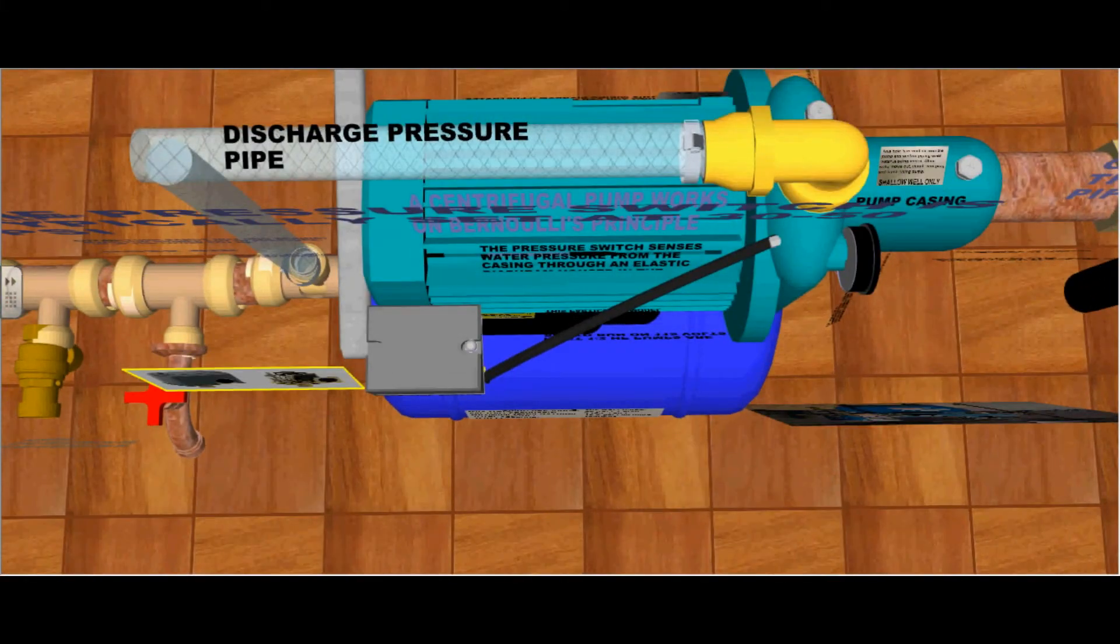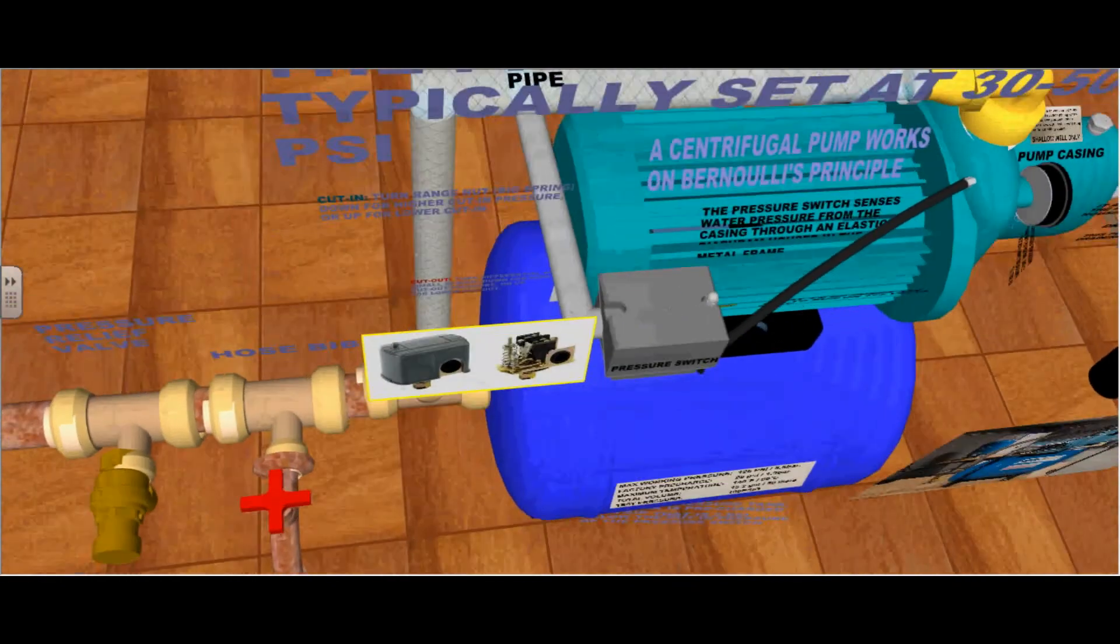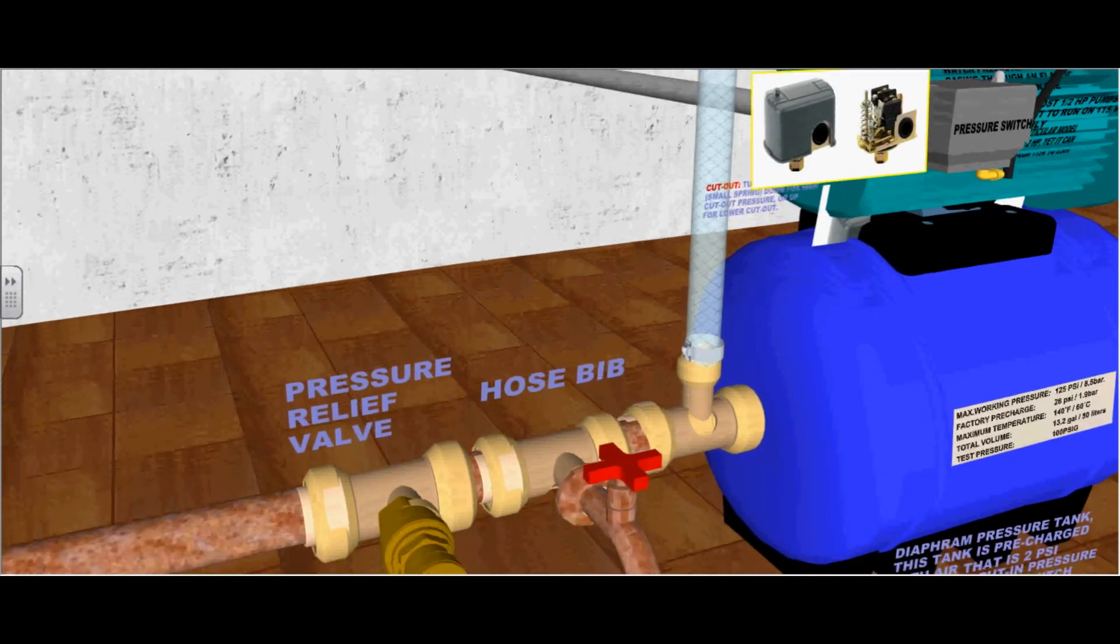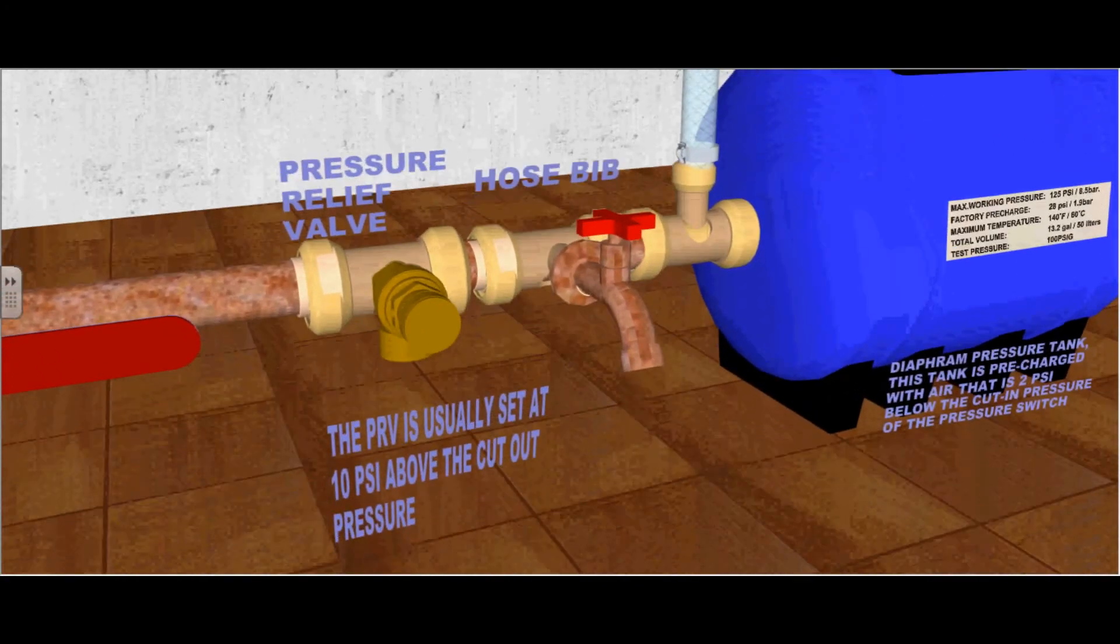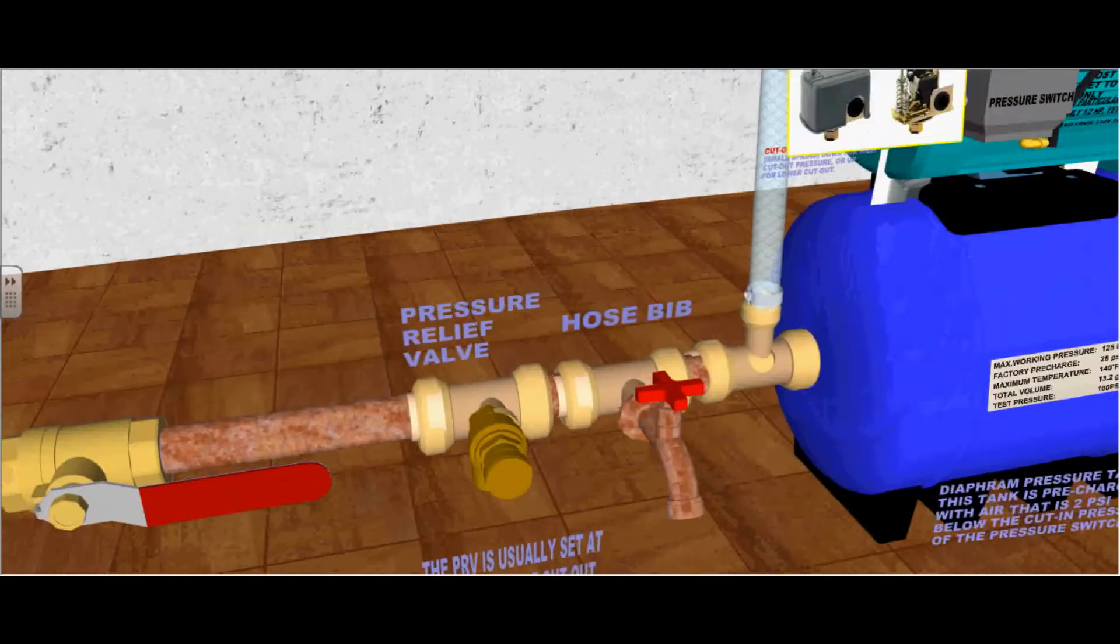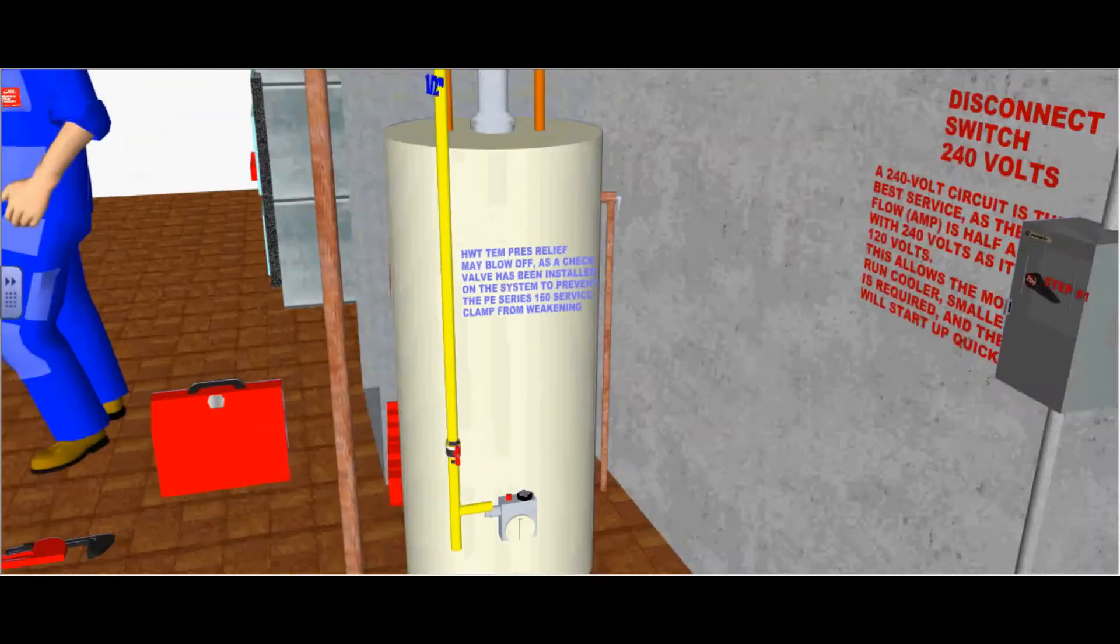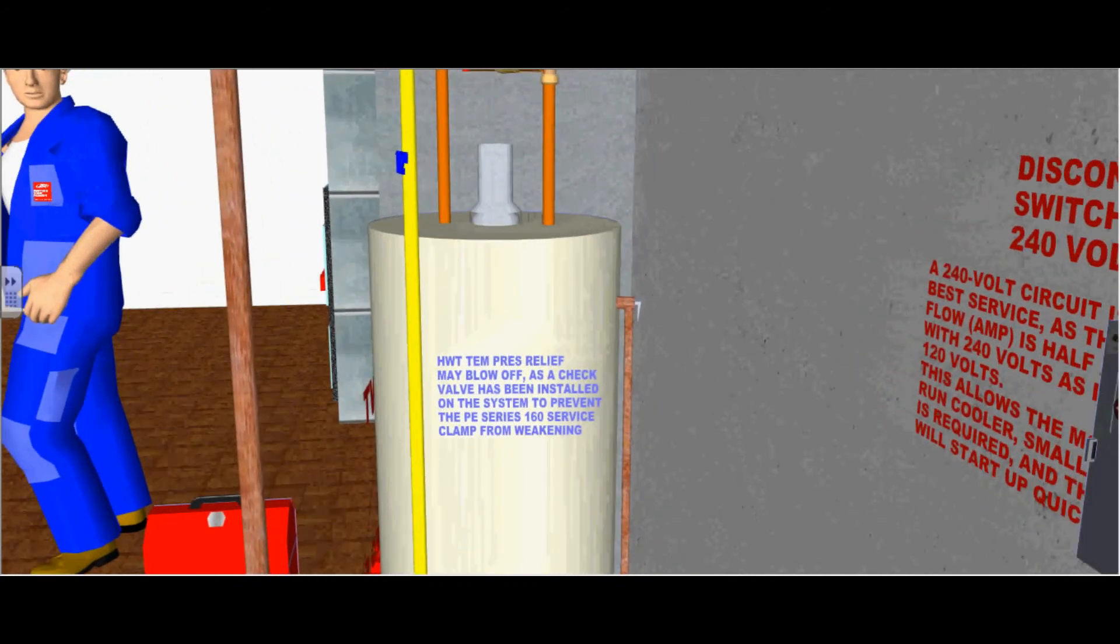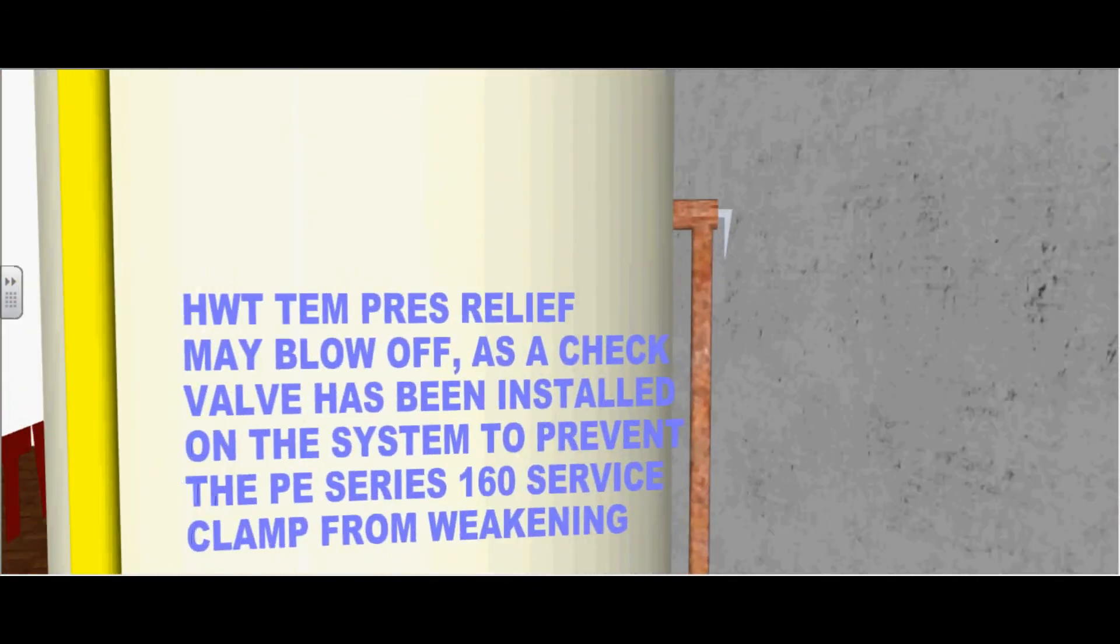This is the discharge pressure pipe coming from the volute casing. Here is a hose used to test the water and purge the system. This pressure relief valve is usually set at 10 psi above the cut-out pressure. In this particular case, the hot water tank temperature pressure relief valve may blow off as a check valve has been installed in the system to prevent the polyethylene service clamp from weakening.